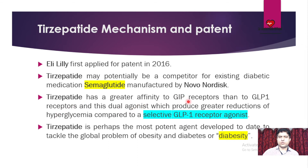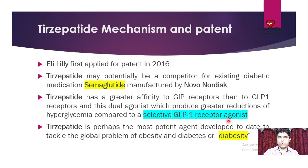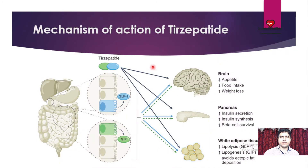Tirzepatide has greater affinity relative to GIP receptors than to GLP-1 receptors. This dual agonist produces greater reduction of hyperglycemia and less decrease of low glucose levels in the blood compared to a selective GLP-1 receptor agonist. Tirzepatide is perhaps the most potent agent developed today to tackle the global problem of obesity and diabetes, with very strong activity.